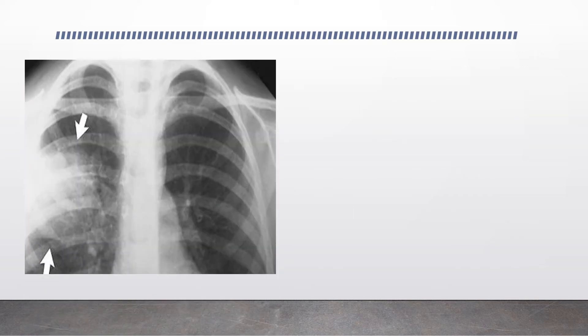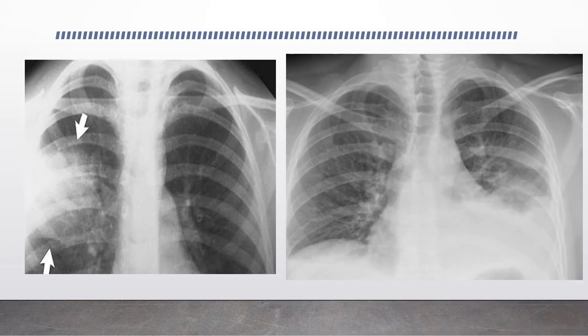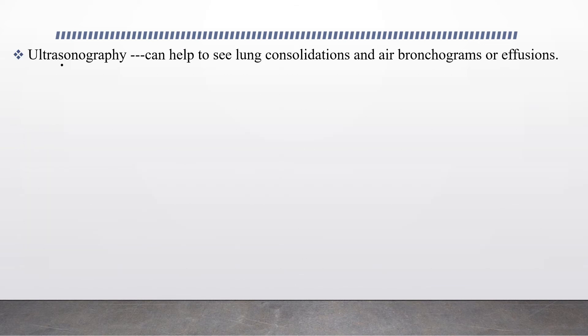This chest X-ray shows right middle lobe consolidation, or right middle lobe pneumonia, and this one shows a patient with pneumonia and left pleural effusion. Ultrasonography can help identify lung consolidation, air bronchograms, or effusion. Ultrasonography is very helpful in diagnosing pneumonia, but it depends on the experience of the person performing the procedure.